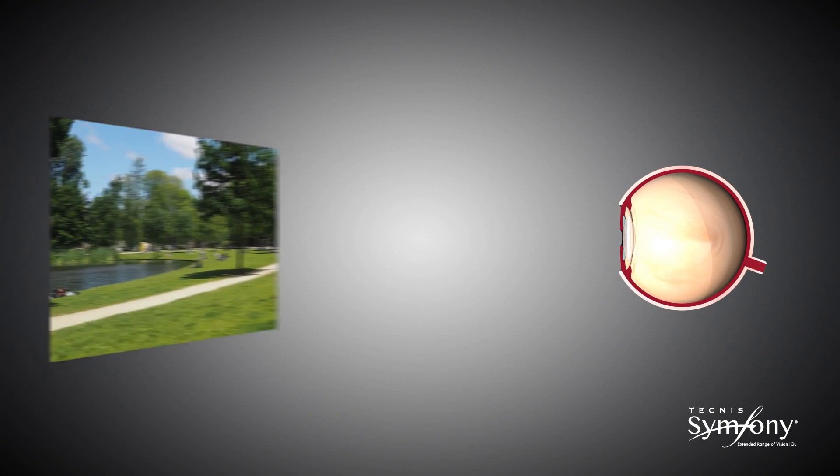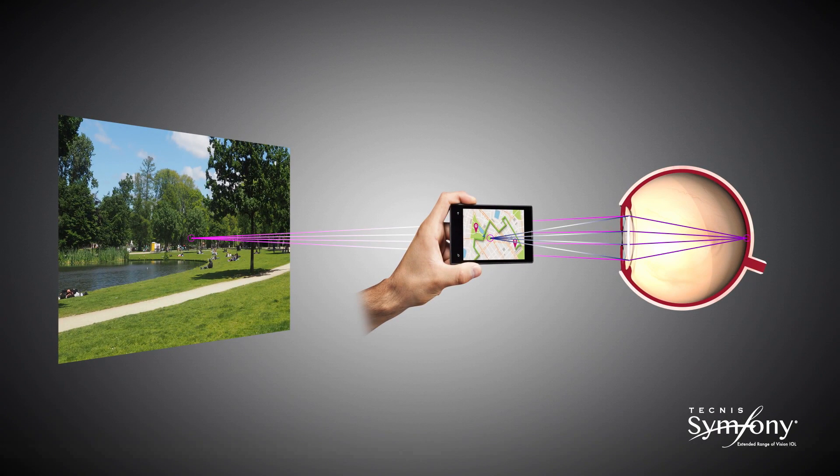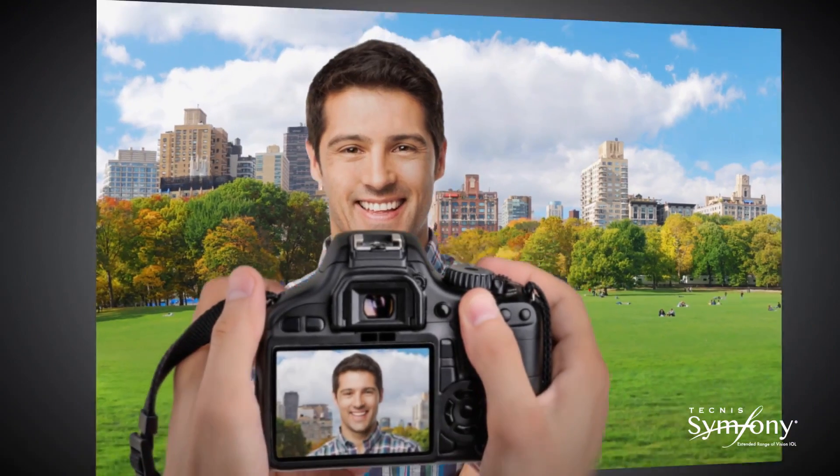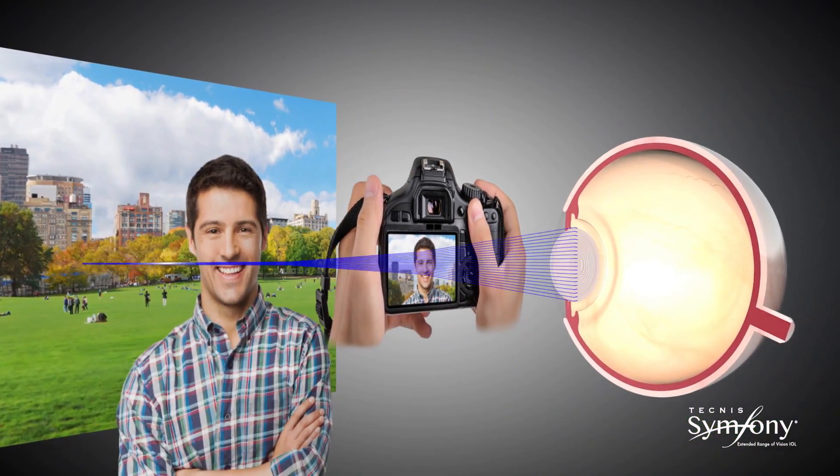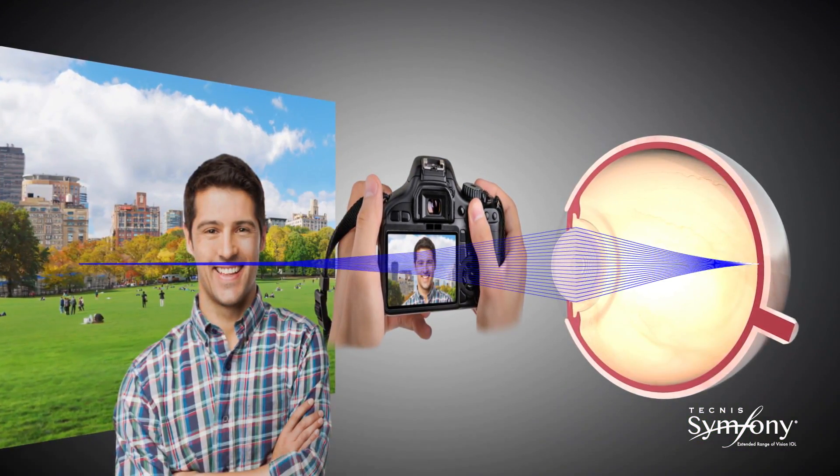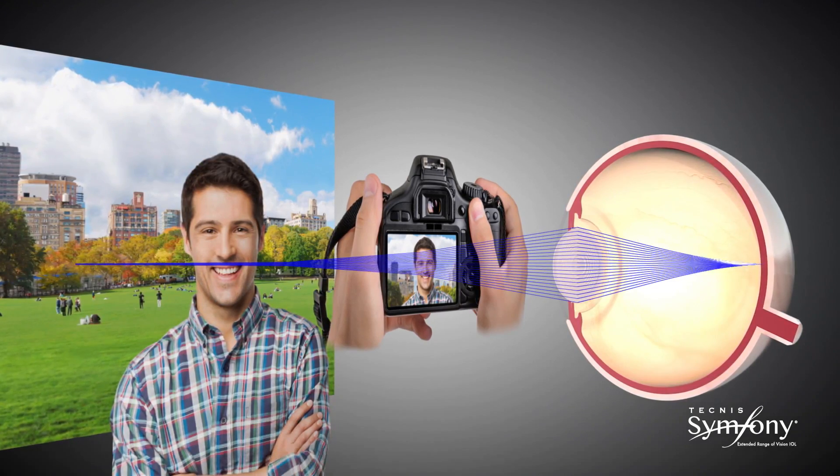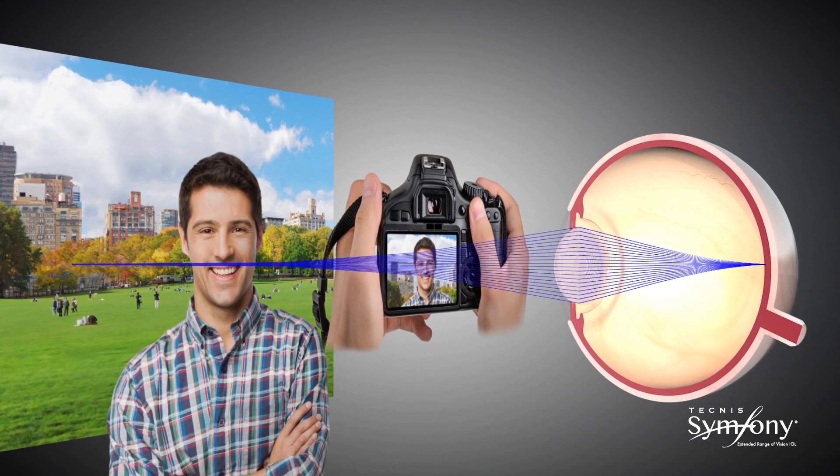In multifocal IOLs, diffractive technology transmits the light in such a way that it converges at more than one focal point. Tecnis Symphony diffractive lens technology is optimized to transmit light over a range of distances. This is called constructive interference and results in an elongated focus.